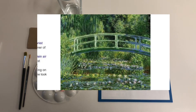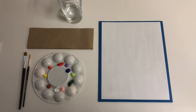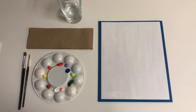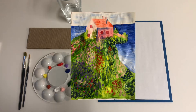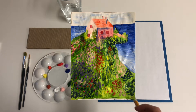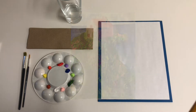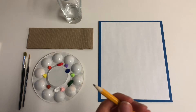Today we are going to be creating our own picture and we are going to be using paint. This painting is going to be in the style of Monet, so we are going to be using little impressions of color throughout our picture. First, make sure that you have all of your materials.